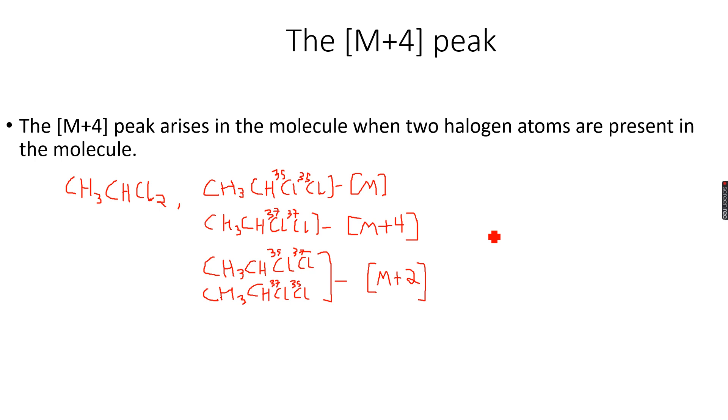Now let's do something using probabilities. If I have 2 Cl-35, I can simply say that the probability that this molecule will exist is 3/4 times 3/4, because the percentage abundance of Cl-35 is 75%.